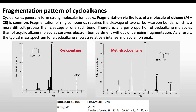Further fragmentation in cycloalkanes includes m minus 28 (loss of an ethane molecule), and other fragmentations by loss of m minus 15, m minus 29, m minus 43, and m minus 57 from the molecular ion. These represent the predicted fragmentation patterns for cycloalkanes.